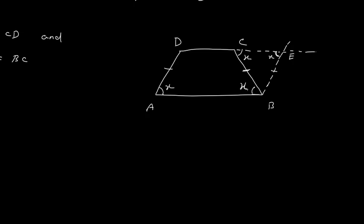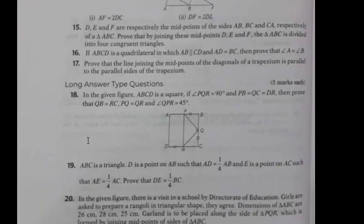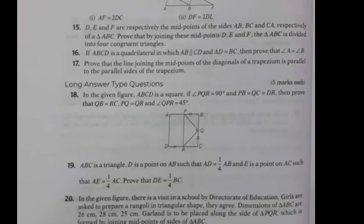We have proved that the base angles are equal when one pair of opposite sides is given parallel and the other pair is given equal. For this you should avoid the condition of a parallelogram, because if you take a parallelogram the base angles may or may not be equal. Now the 17th question: prove that the line joining the midpoints of the diagonals of a trapezium is parallel to the parallel sides of the trapezium.